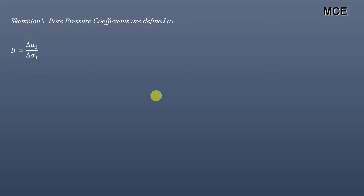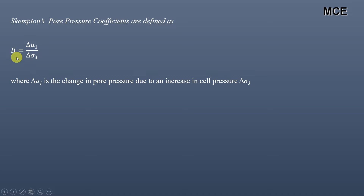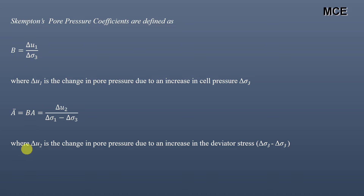First, let us define Skempton's pore pressure coefficients B and A-bar. Coefficient B is defined as delta u1 divided by delta sigma 3, where delta u1 is the change in pore pressure due to the increase in cell pressure — that is, the ratio of change in pore pressure when cell pressure is increased in the triaxial test. Skempton's other pore pressure coefficient, A-bar, is defined as delta u divided by (delta sigma 1 minus delta sigma 3), where delta u is the change in pore pressure due to an increase in deviator stress. Note that A-bar equals B times A.